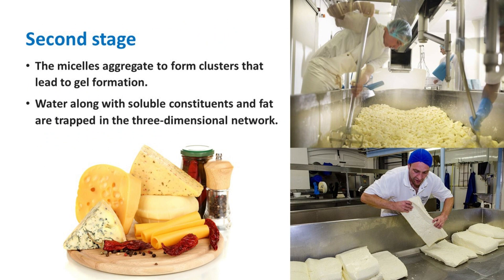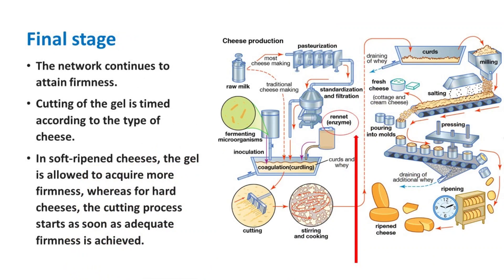In the second stage, the micelles aggregate to form clusters that lead to gel formation. Water along with soluble constituents are trapped into the three-dimensional network. In the final stage, the network continues to attain firmness. Cutting of the gel is timed according to the type of cheese — in soft-ripened cheese the gel is allowed to acquire more firmness, whereas for hard cheese the cutting process starts as soon as adequate firmness is achieved.